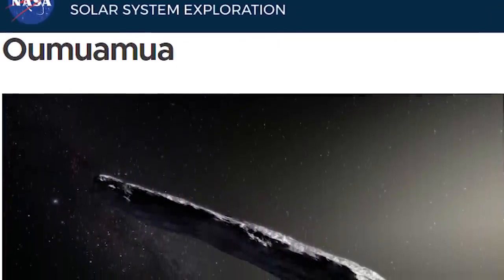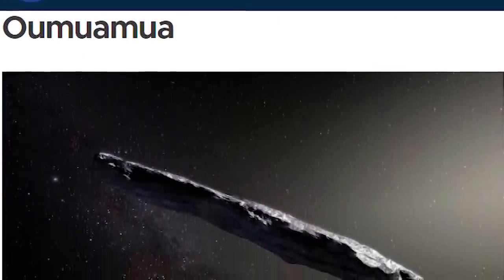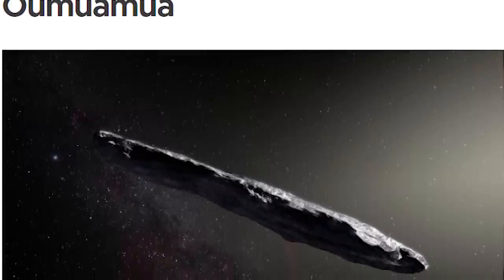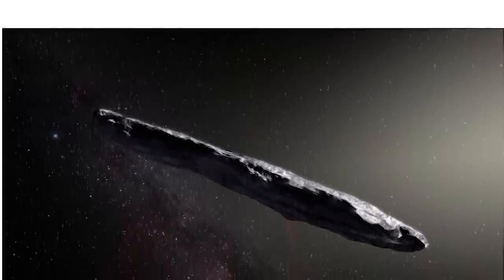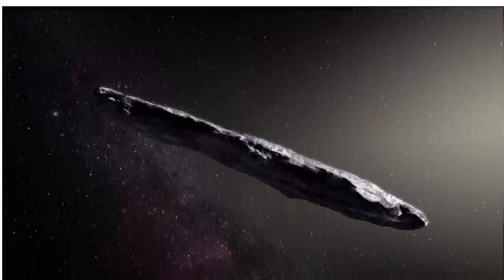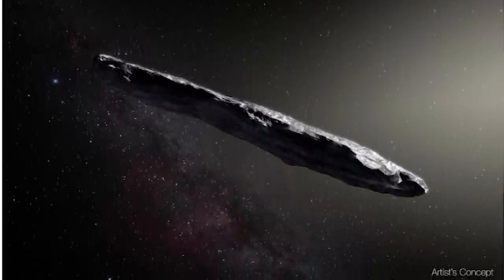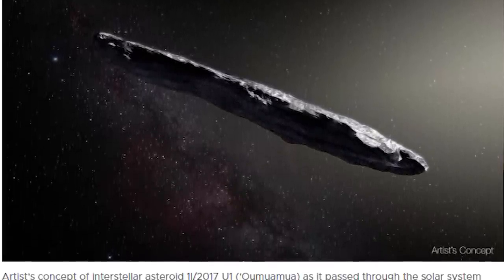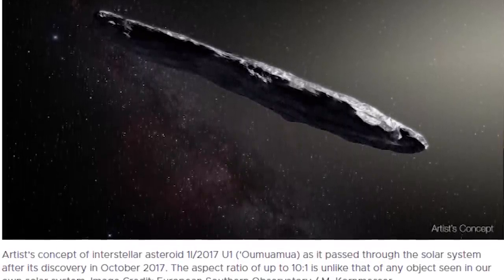As such, Oumuamua is thought to be around 400 meters, or a quarter mile in length, and just 40 meters wide. There are some estimates that put it at 800 by 80 meters, or even 160 meters in width. Whatever the case, the shape is certainly weird, and this could give us clues as to how other solar systems form.